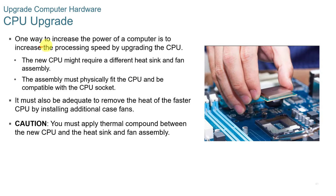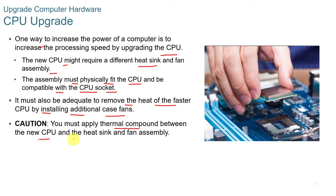When upgrading a CPU, the new CPU may require a different heat sink and fan assembly. The assembly must physically fit the CPU, be compatible with the CPU socket and case, and be adequate to remove the heat of the faster CPU. You may need additional case fans. Make sure to apply thermal compound between the new CPU and the heat sink — there are many videos online showing how to do this properly.